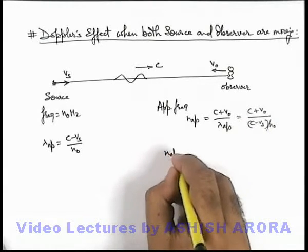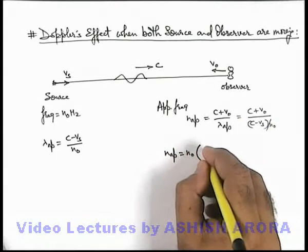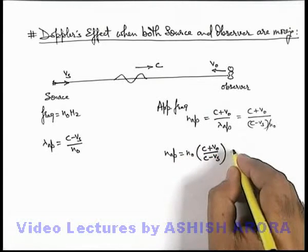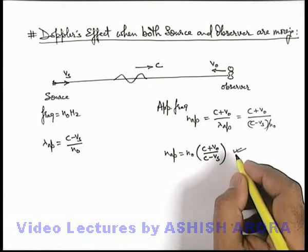So here n_apparent can be given as n₀(c + vo)/(c - vs). Now this is the relation which is used here.